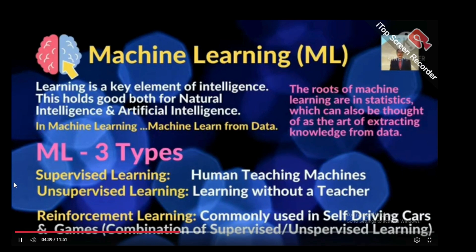There are three types of Machine Learning. First, Supervised Learning — human teaching machines. Second, Unsupervised Learning — learning without a teacher. Third, Reinforcement Learning — commonly used in self-driving cars and games. It is a combination of supervised and unsupervised learning, also called semi-supervised learning.